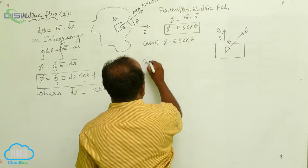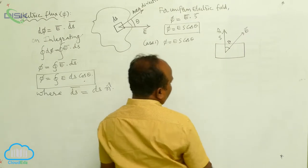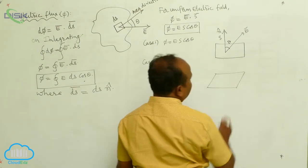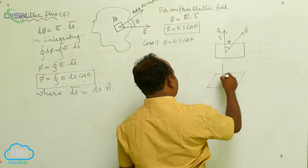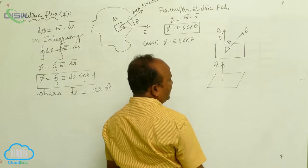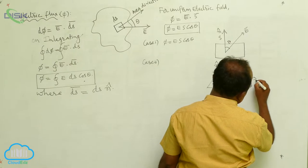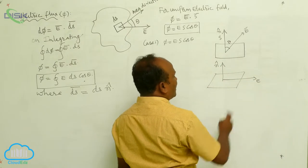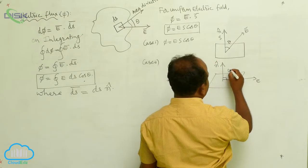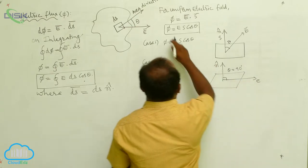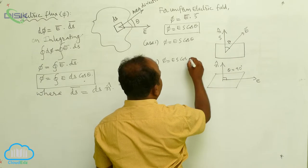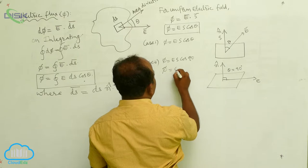Case 2: Suppose there is an area. Perpendicular to the area there is a unit vector. Now the electric field intensity is directed such that the angle between the electric field intensity and the area vector is 90 degrees. Therefore, phi equals E·S·cos90°, which gives phi equal to 0.